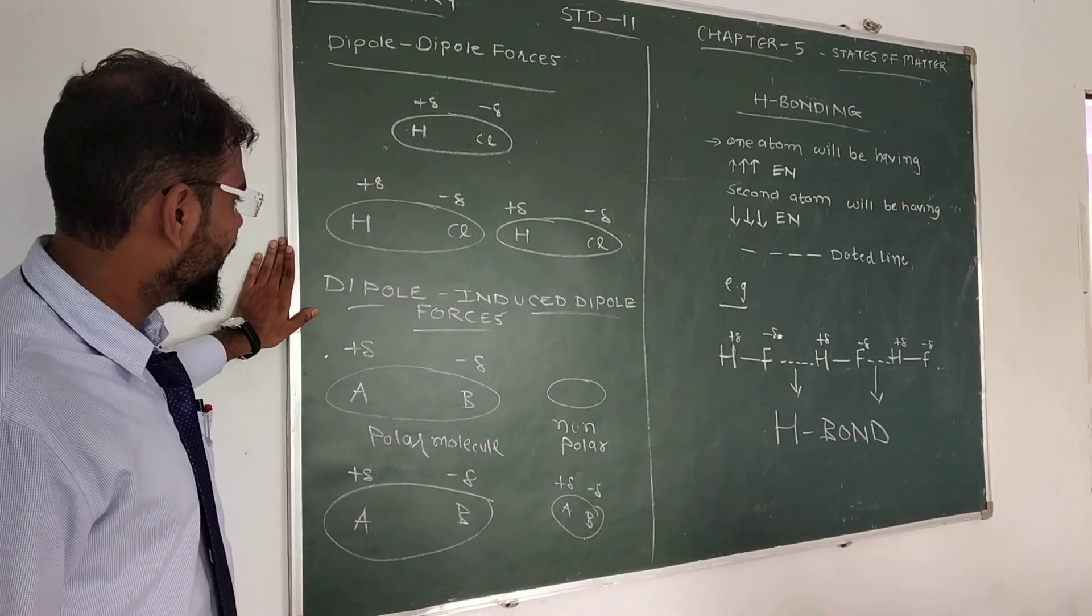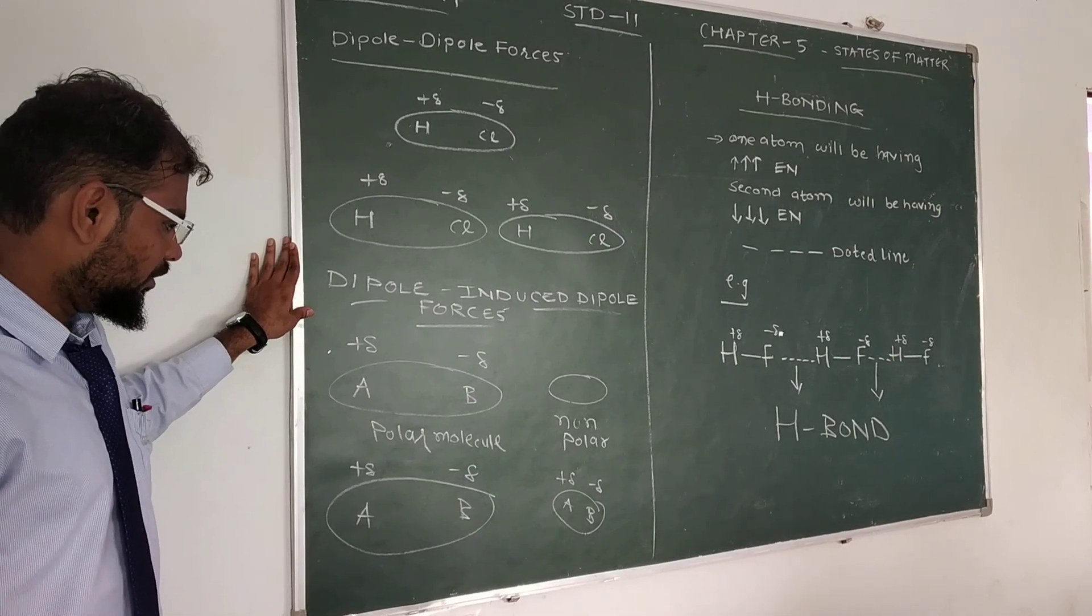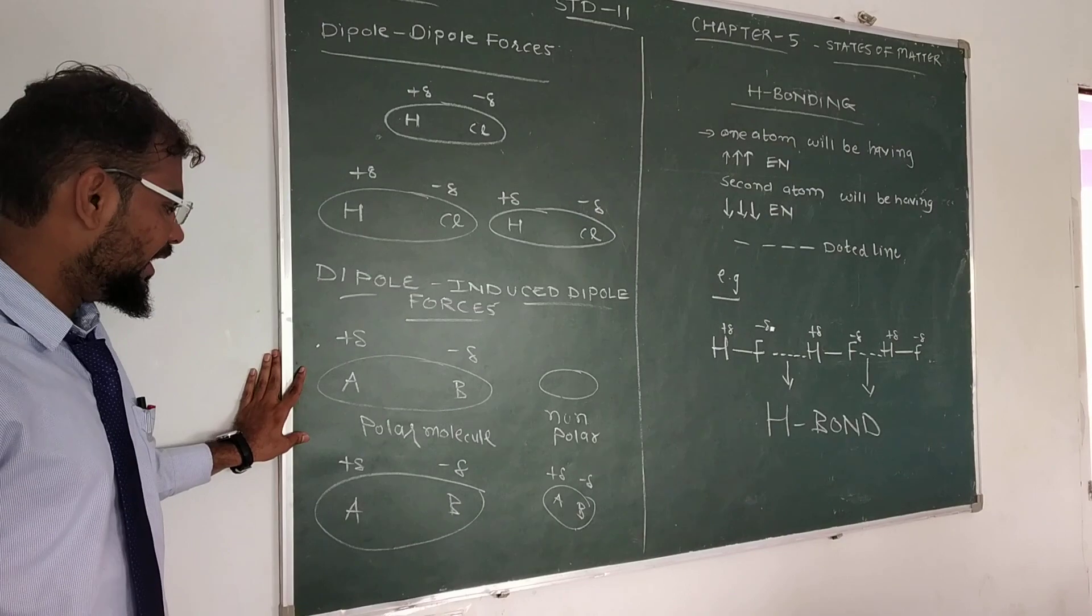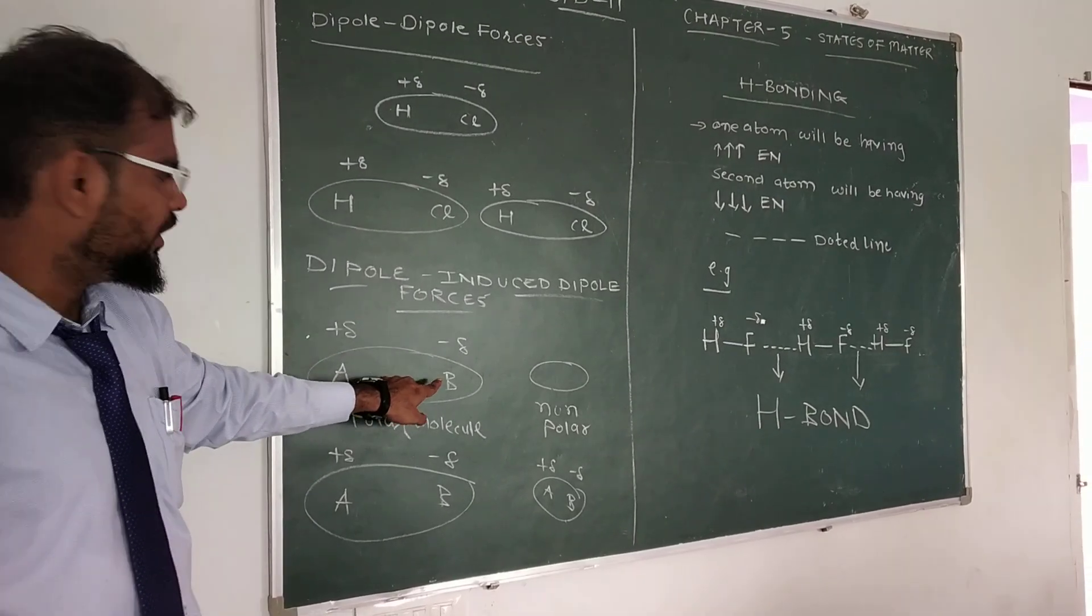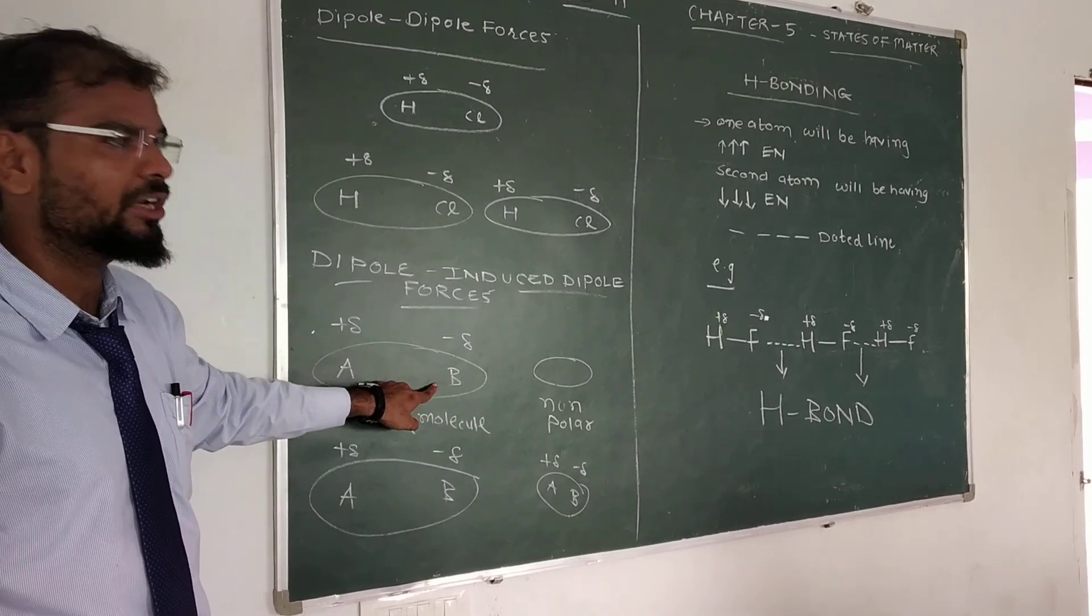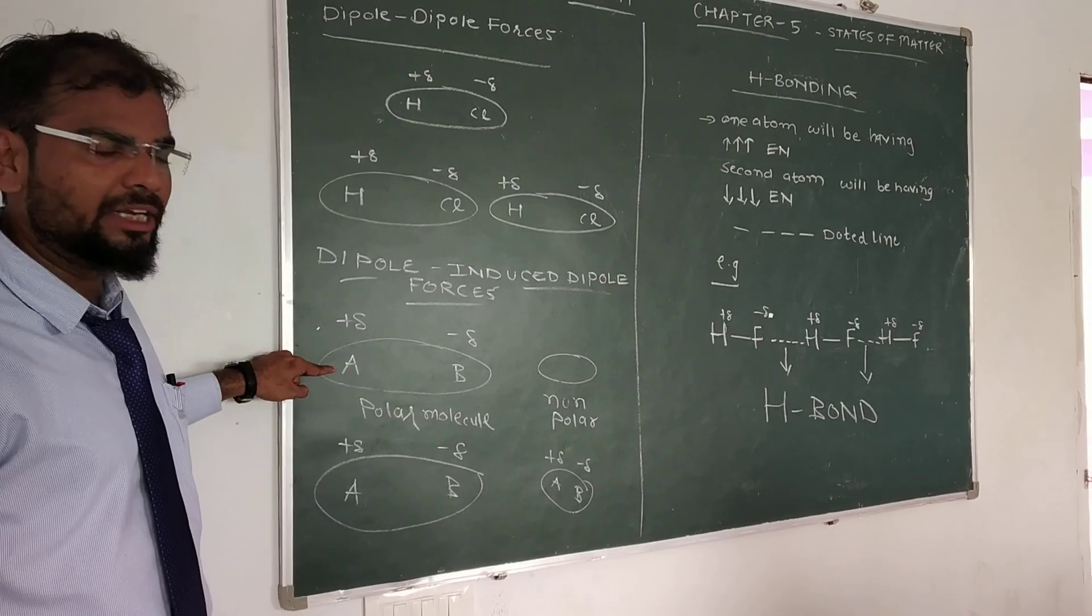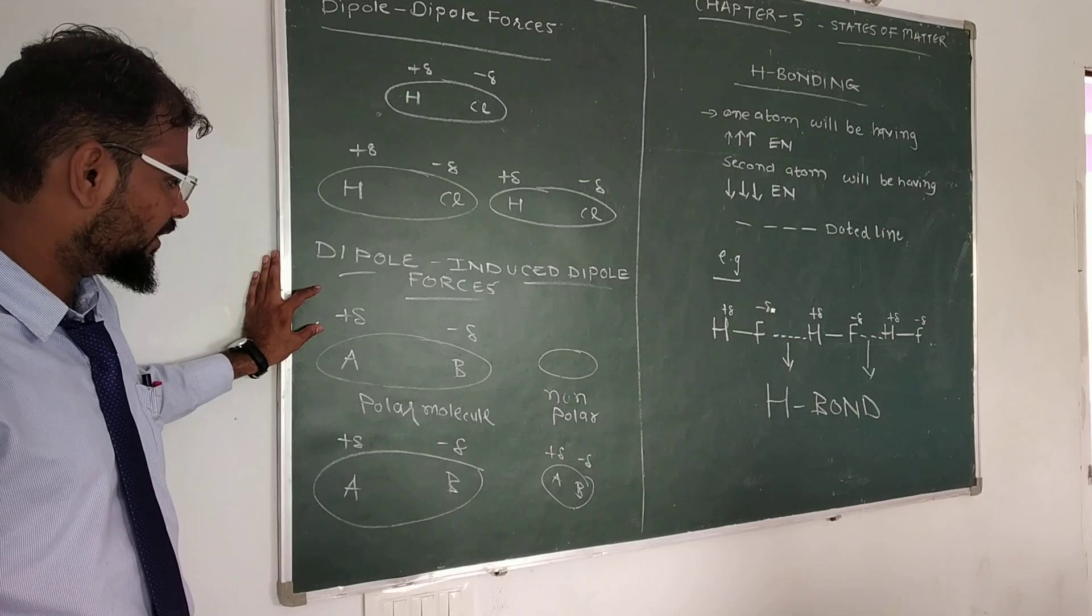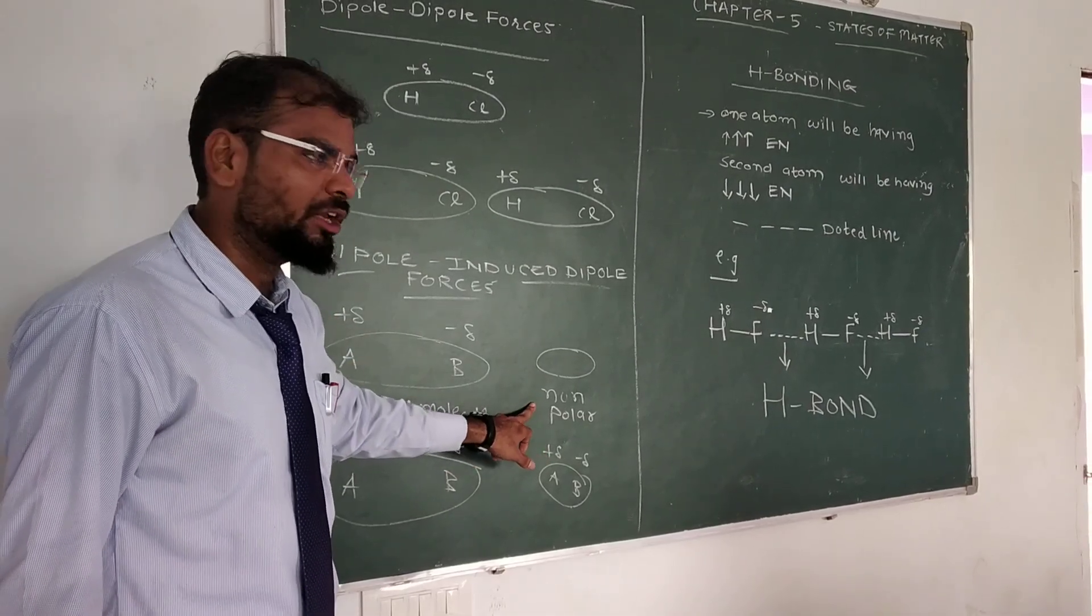Then second force, the name is dipole-induced dipole forces. Here also we have given one example, polar molecule. We have given the random names A and B, whereas B, if you see, there is partial negative charge, which contains more electronegativity compared to A. In A, electronegativity is less, so because of that, partial positive charge is there. Now such polar molecule is coming closer to the non-polar molecule.